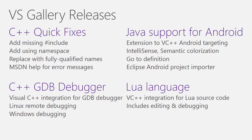The GDB debugger extension exposes the debugger engine we're already using for Android and iOS to more general scenarios, allowing, among others, Linux remote debugging as well as local debugging of binaries built with other Windows compiler toolchains. We already talked about the Java support for Android. What I didn't mention earlier is that it also comes with an Eclipse Android project importer that allows you to easily port your existing Android projects into Visual Studio.